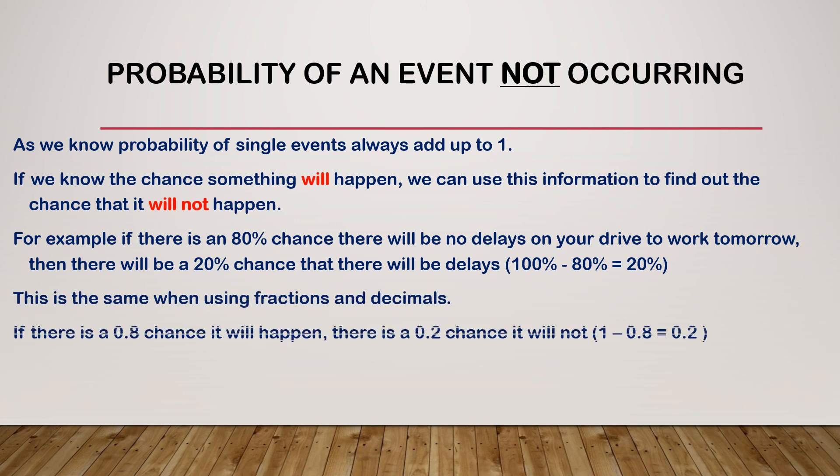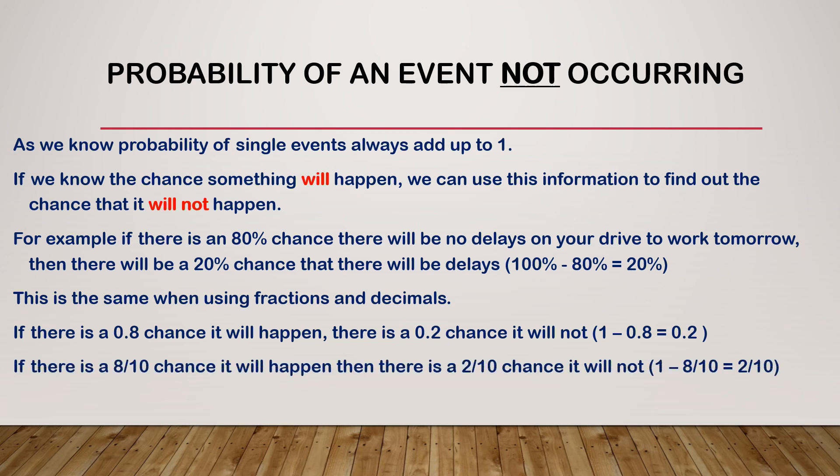It's the same when using fractions or decimals. If it's 0.8 that it will happen, it'll be 0.2 that it won't. 1 take away 0.8 gives us 0.2. The same with fractions. If there's an 8 out of 10 chance it will happen, there's a 2 out of 10 chance it won't. 1 take away 8 out of 10 gives me 2 out of 10. So probability always adds up to 1.